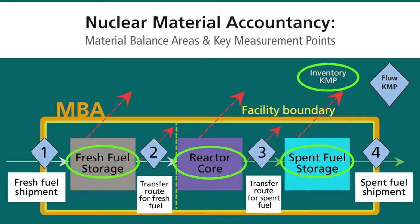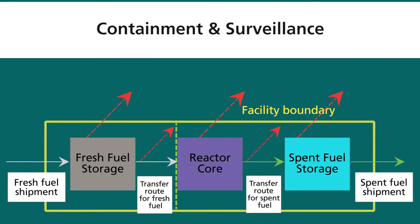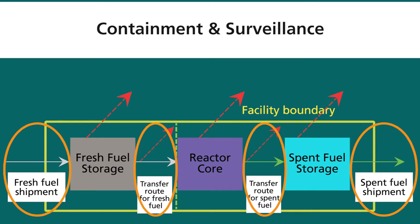Moving on to containment and surveillance: in safeguards generally, redundancy is important — if one system fails, the next picks it up. Containment and surveillance measures are placed over all transfer and flow routes as well as storage and inventory areas, essentially covering the entire facility. Redundancy is our friend with safeguards.